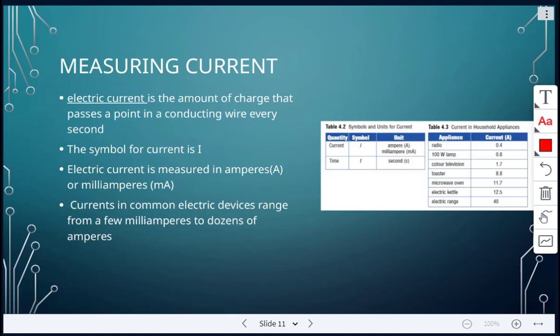All right, so next we are looking at measuring current. So electric current, this is the amount of charge that passes a point in a conducting wire every second. And the symbol for current is the capital I. That's the symbol for current. But it is measured in amperes, capital A, or in milliamperes, mA. So currents in common electric devices can range from a few milliampere to dozens of amperes.